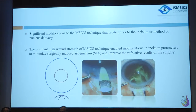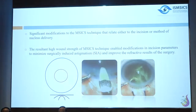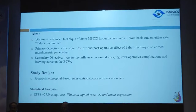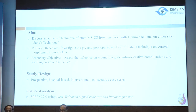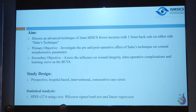The aim of the study is to discuss the advanced technique of a 2mm frown incision with 1.5mm back cuts on either side — Sahu's technique — with further modifications increasing back cuts to 2.5–3mm. The primary objective is to investigate pre- and post-operative effects on corneal morphometric parameters, wound integrity, intraoperative complications, and learning curve. Modified instruments developed by Dr. Sahu are introduced.